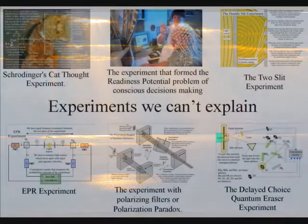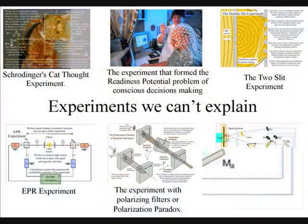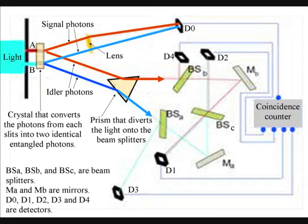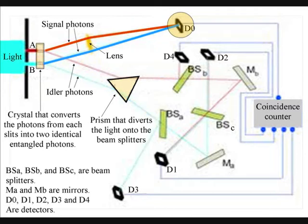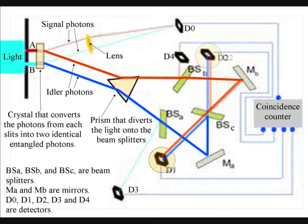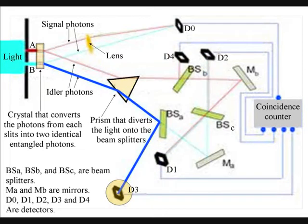The next experiment we will look at is the delayed-choice quantum eraser experiment. It has been said this is by far the strangest and most thought-provoking experiment in physics. People have even gone as far as to say that this experiment shows that the future can affect the past.